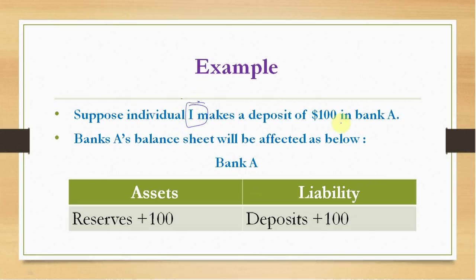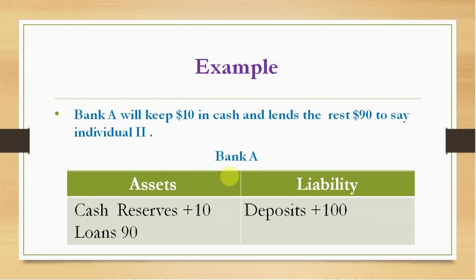Now let us take an example. Suppose the first individual makes a deposit of $100 in a bank called Bank A. Bank A's balance sheet will be affected as follows: on the liability side, deposits go up by $100, and on the asset side, cash reserve goes up by $100. Since the cash reserve ratio is 10%, Bank A will maintain a CRR of $10 in the central bank.